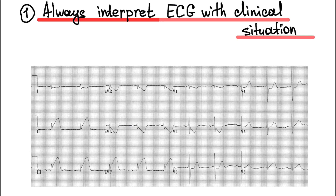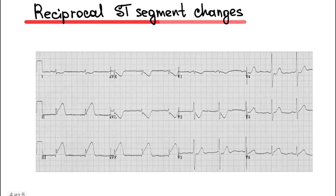Look at this ECG. We can see ST segment elevation at leads II, III, and aVF. If the person has ischemia-like symptoms, we think about acute coronary syndrome with ST segment elevation. One more feature: if it is acute coronary syndrome, we can see reciprocal ST segment changes on the ECG, such as ST segment depression at lead I and aVL.